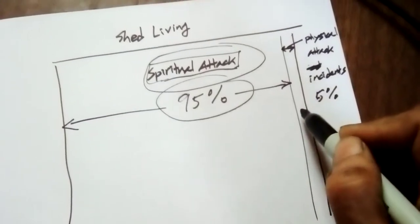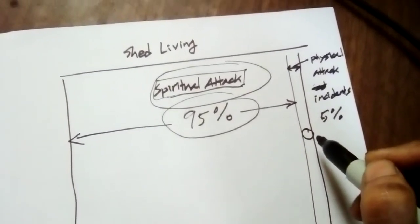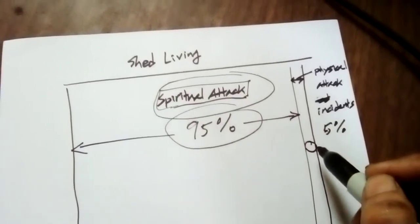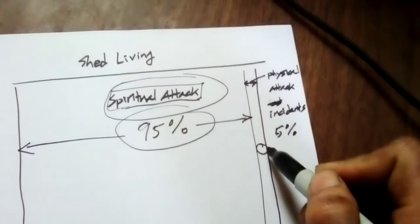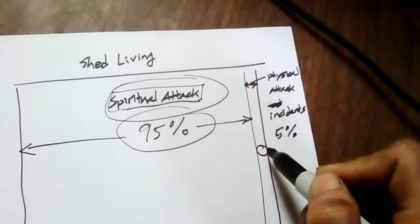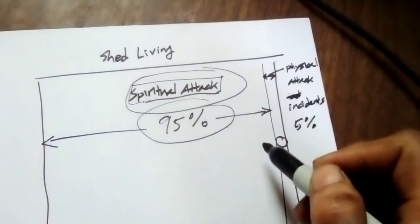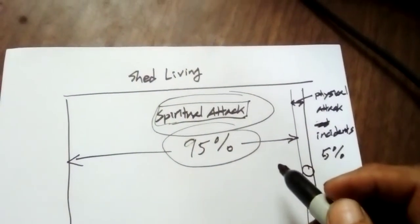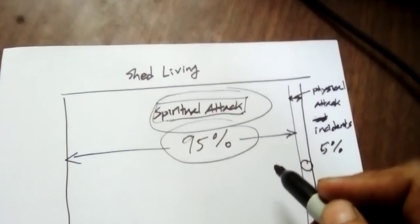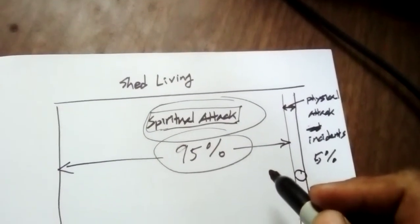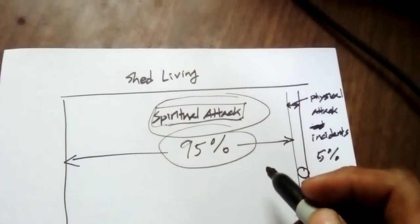And the only thing you have to worry about is maybe 3-5% of physical troubles. Not even that. Because God has control over everything. And you would have no problem in your life. You would have an enjoyable, fun life out here in the wilderness or anywhere. Even living in an apartment. It doesn't matter what location, where you go, where you live, what kind of life you live.